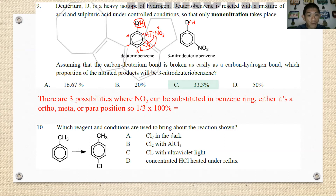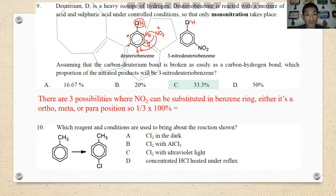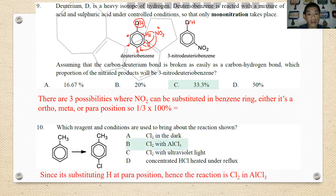Number ten: which reagent conditions are used for the reaction? This is methylbenzene substituted at the para position — an electrophilic aromatic substitution reaction. The reagents are definitely Cl2 in AlCl3. The answer is B.